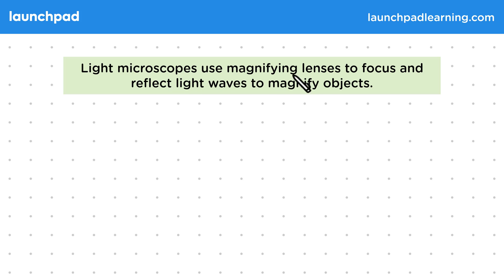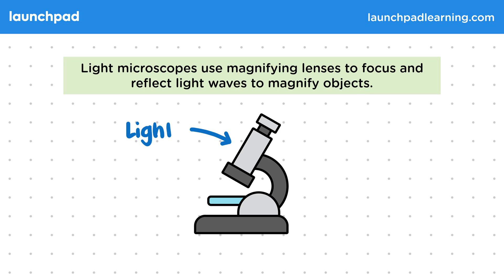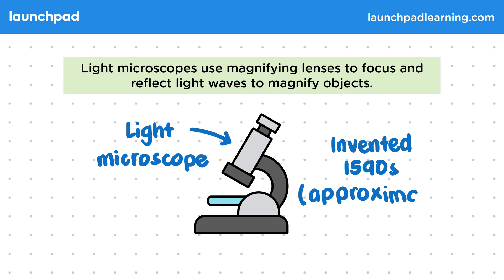Light microscopes use magnifying lenses to focus and reflect light waves to magnify objects. This diagram shows a light microscope. The first light microscopes were most likely invented in the 1590s in the Netherlands by makers of eyeglasses. Modern light microscopes look very different from these early examples. For your exam, you aren't required to know details of the history of the microscope, but you do need to know about the two different types of microscopes, one of which is the light microscope.